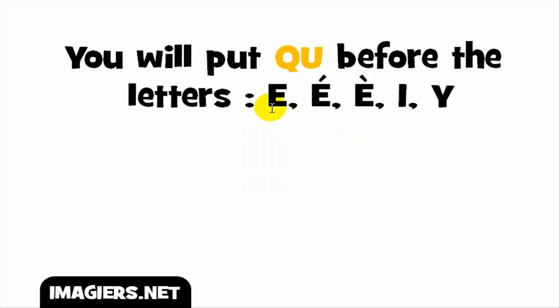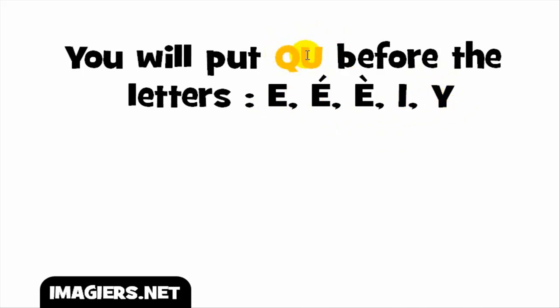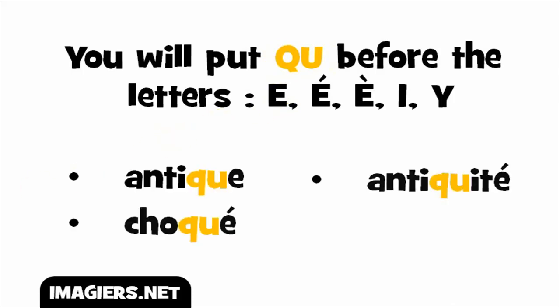These vowels especially: E, E accent aigu — remember it's the sound /e/ — E accent grave — it's the sound /e/ — and then I, and Y. Remember that you will pronounce Y like E. Before these letters, you will have to put Q-U, two letters, just to get the sound /k/. So we'll see now a few examples.